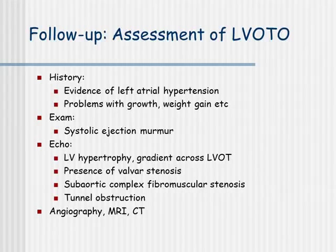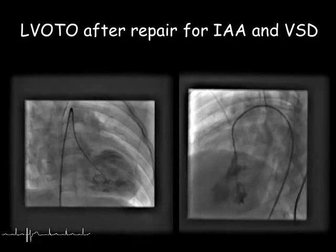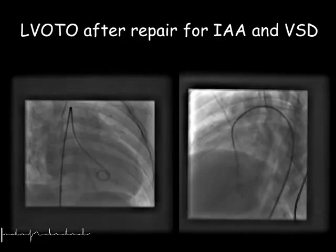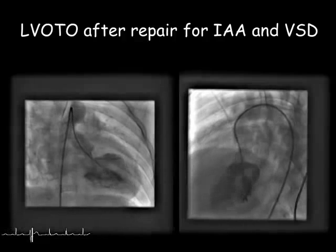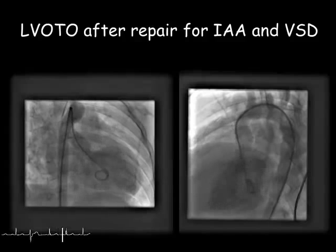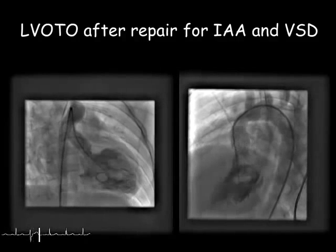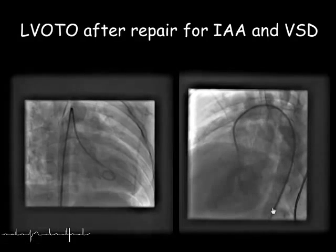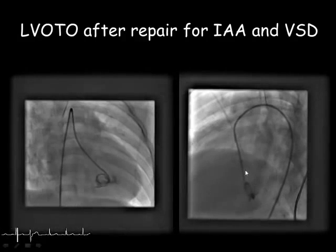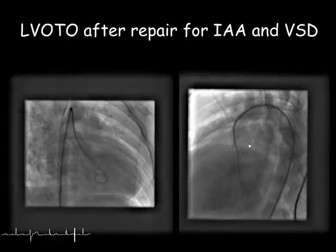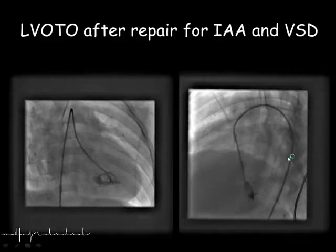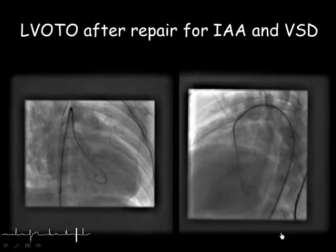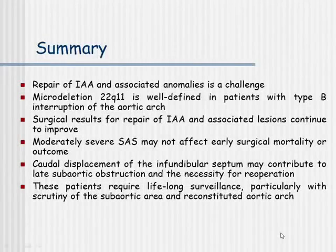We can also perform angiographies, MRI, or CT scan to further image this lesion. Here's a patient of ours who, two years after primary repair, developed subaortic stenosis with a gradient of 50 mmHg and is now booked for surgery.